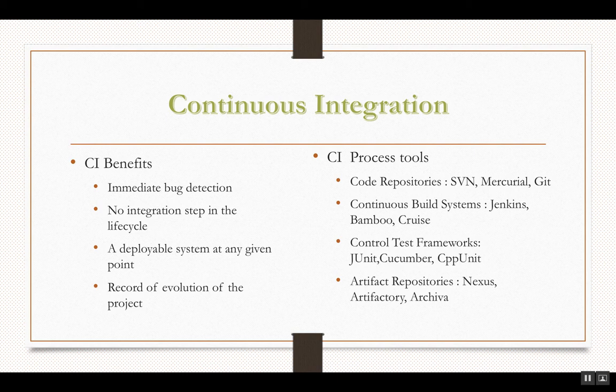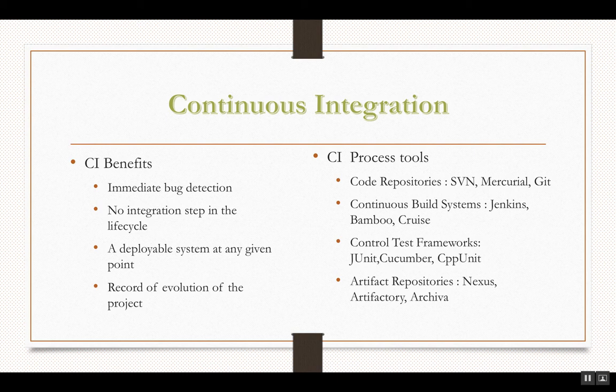Continuous integration involves a lot of tools. It requires code repositories — the most commonly used one is Git, but there are others like SVN and Mercurial. Then there are continuous build systems, one of which is Jenkins; there is also Bamboo and Cruise. Test frameworks include JUnit, Cucumber, and CPPUnit. Artifact repositories include Nexus, Artifactory, and Archiva. Continuous integration is a very good development approach that agile teams follow.